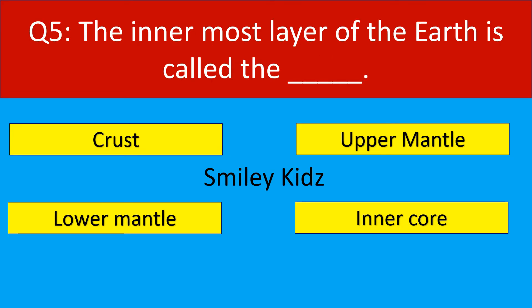Question number 5. The innermost layer of the earth is called the dash. Options are: crust, upper mantle, lower mantle, inner core.